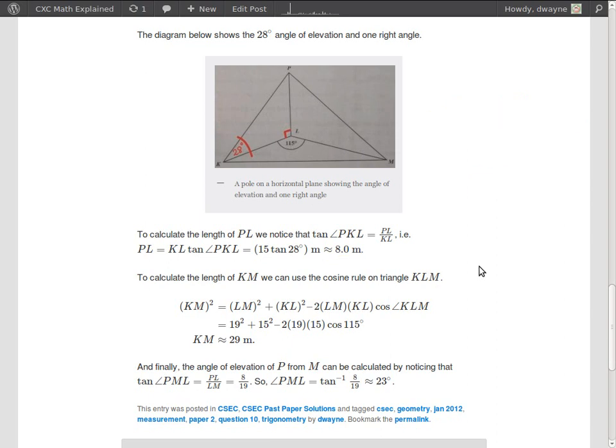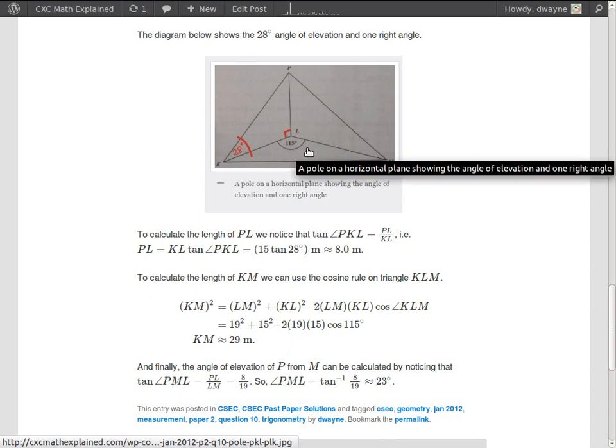Okay, the next part asks us to find the length of KM. Unfortunately, KM doesn't lie on, isn't a side of a right-angled triangle. So we can't use sine, cosine, or tangent to help us in the way that we did before. So maybe we could use the sine rule or the cosine rule. Well, what we'd realize is that we have KL, we have LM, and we have the sides of the included angle. So that hints to us that we should use the cosine rule. Right, we have two sides and an included angle, so we should use the cosine rule.